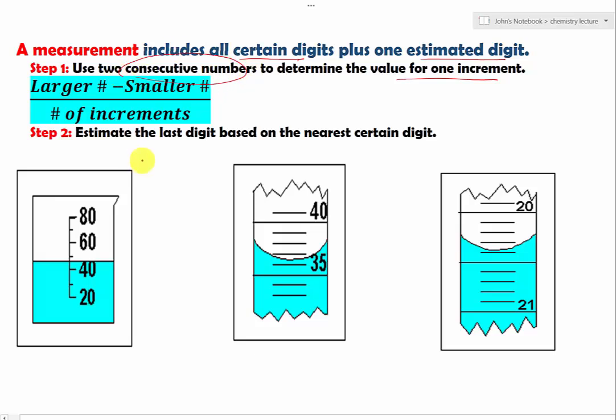For instance, let's look at this one right here. We have 20 to 40 or 40 to 60. If you notice 40 to 60, we have 1, 2. There are two increments there. To determine the values for one increment...